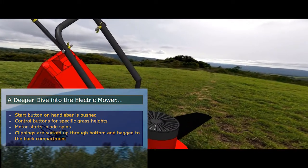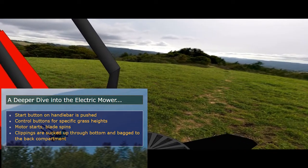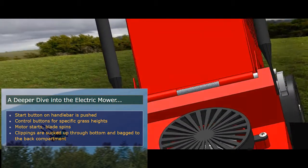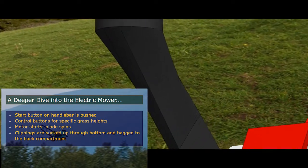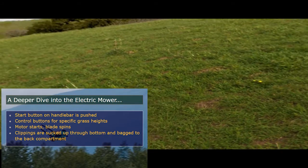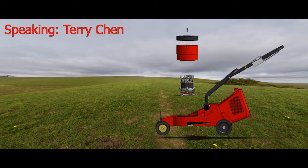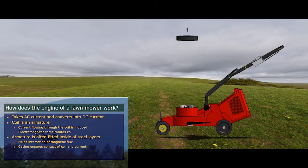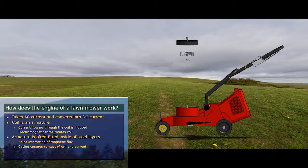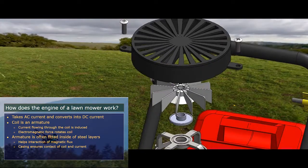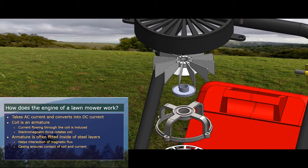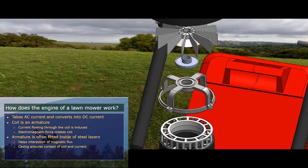To start the lawnmower, all that needs to happen is the start button on the handlebar has to be pushed. Then you can use the control buttons for specific grass heights, and when the motor starts, the blade will spin. Within the main body of the lawnmower lies an electric motor with an armature, several windings of conductive material, and a permanent magnet. This rotor is attached to the blade at the bottom and fan at the top. Once you connect the plug, common AC current begins to flow. This is changed to DC current.